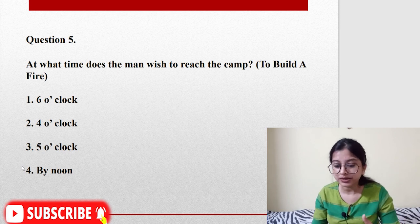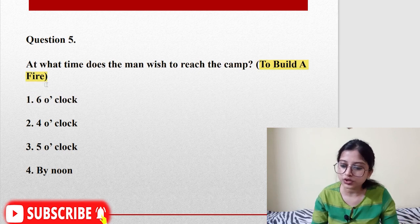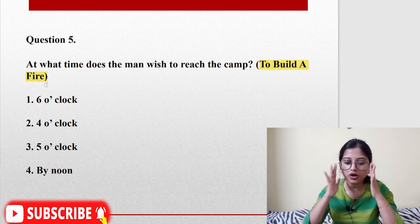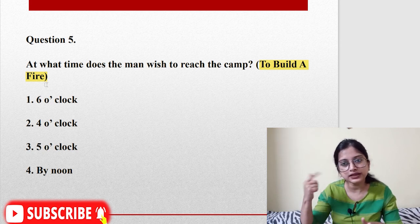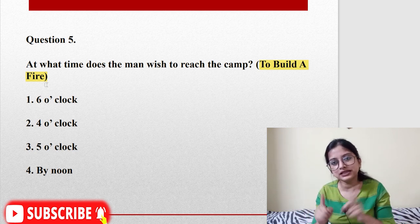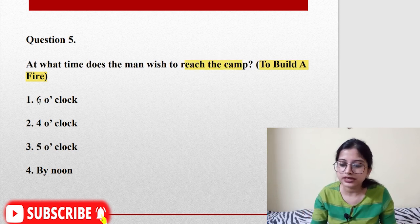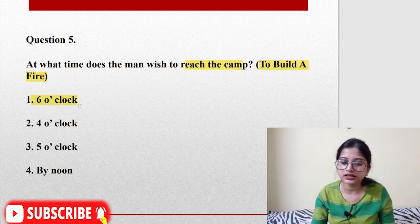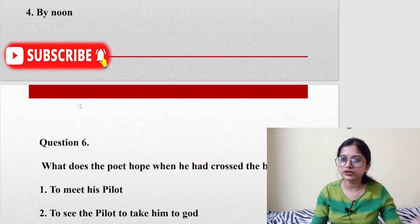Question number five: At what time does the man wish to reach the camp? Options are six o'clock, four o'clock, five o'clock, or by noon. There's a difference between reaching the camp and reaching that particular place where he'll have lunch. For reaching the camp, the answer would be six o'clock—evening by six o'clock he wanted to reach the camp where there would be fire and food.